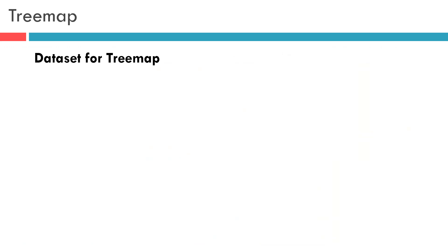Next, let us look at what kind of dataset this chart is preferable for. Treemaps can be suitable in a number of situations depending on your data, your available space, and the relationship you need to explore or emphasize. One scenario is when you want to visualize a part-to-whole relationship among a large number of categories. While a pie chart might work best with three or fewer segments, a Treemap can work with many segments, and patterns in the dataset are easier to see, making it a good choice over a pie chart at the exploration stage of analysis.